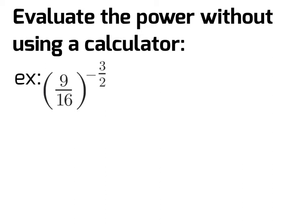The final and most difficult question is: evaluate the power without using a calculator. We have 9/16 to the power of negative 3/2. Let's get rid of that negative exponent first by writing the reciprocal of the fraction, which is 16/9 to the power of 3/2. We've eliminated the negative exponent.